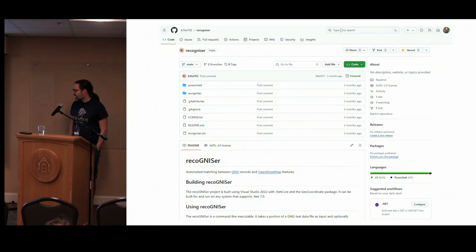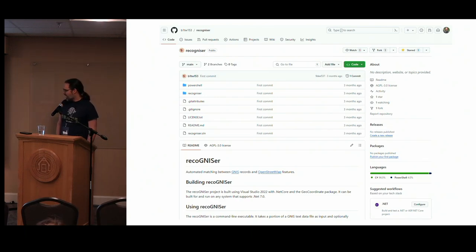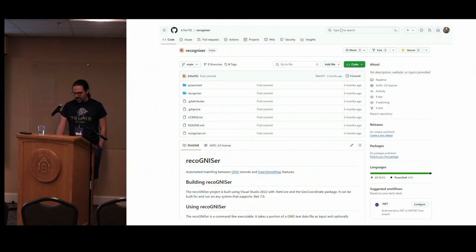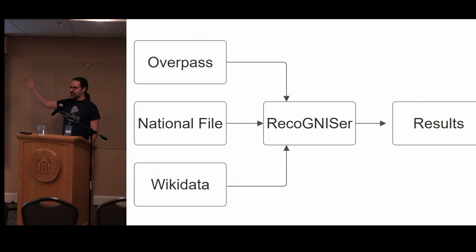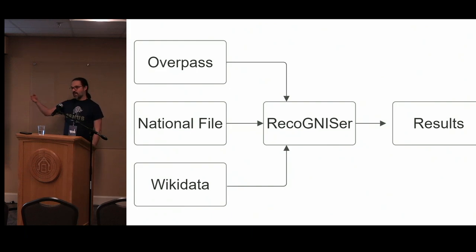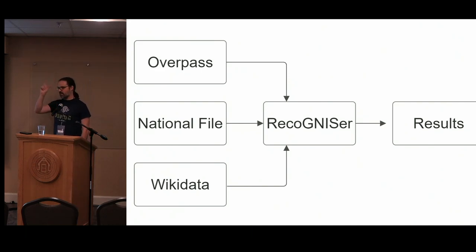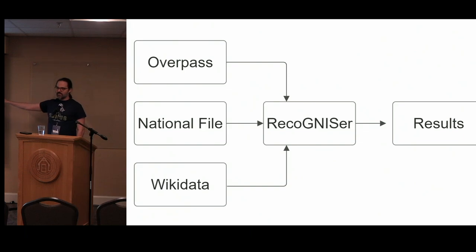That is the birth of the Recognizer program, which I started and has been mainly developed by another mapper named Kai. There's a channel inside the OpenStreetMap US Slack where we chat about these things and do development work. We can trick a computer into doing these things for us. We use Overpass — a querying tool for pulling OpenStreetMap data — we have the national file, and we can also pull from Wikidata, which might have the GNS ID or river data to cross-correlate. We shove all that into Recognizer and let it chew on Overpass for as long as Overpass will let you, and then it coughs out results in various formats.